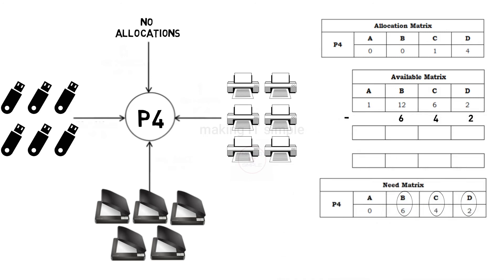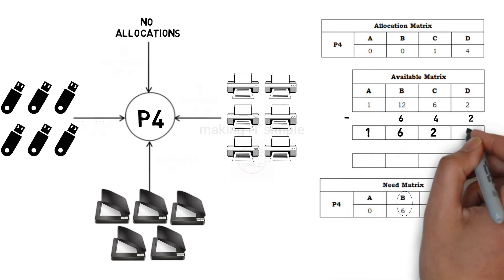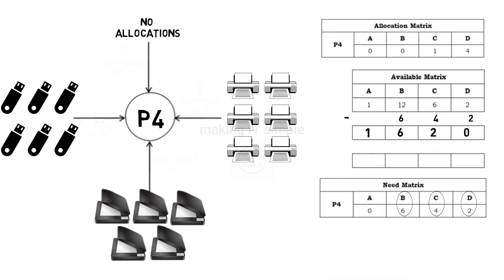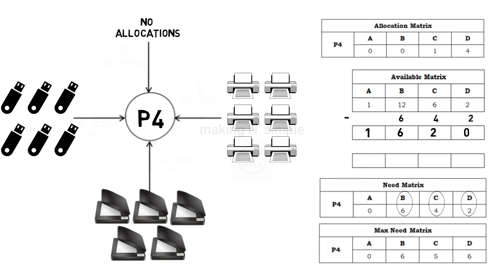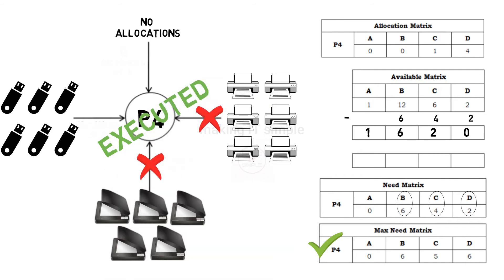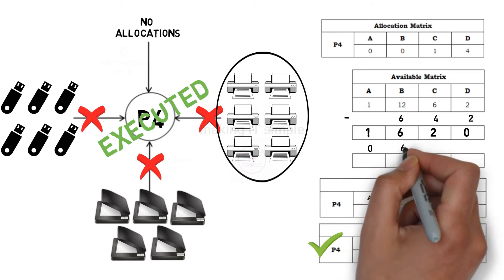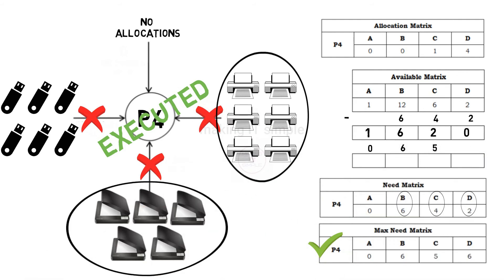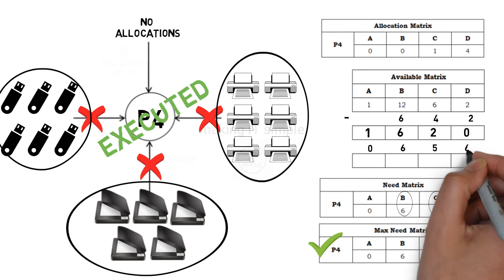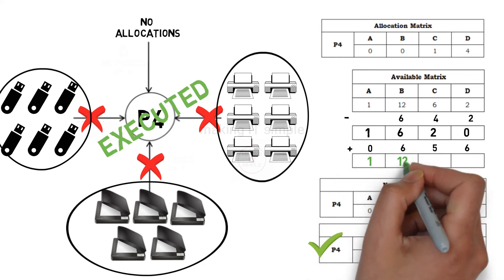So they will get minus from the matrix, and we will have 1 instance of resource A, 6 instances of resource B, 2 instances of resource C, and 0 instances of resource D left. As P4 will get its required resources it will complete its execution, and after completion release the allocated resources. It has no instance of resource A, so 0. Then it will release 6 instances of resource B, 5 instances of resource C, and 6 instances of resource D. So the available matrix will get updated. It will be 1, 12, 7, and 6.